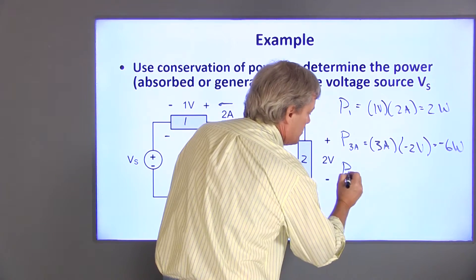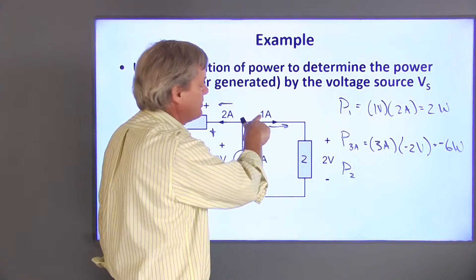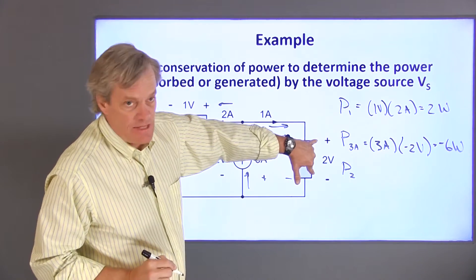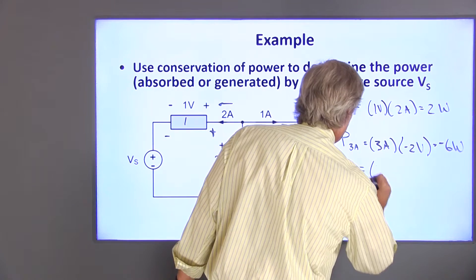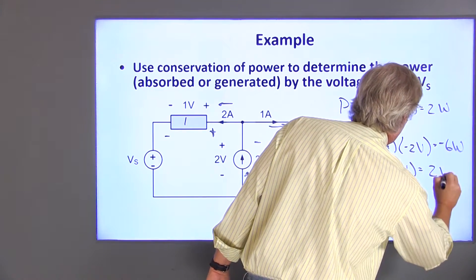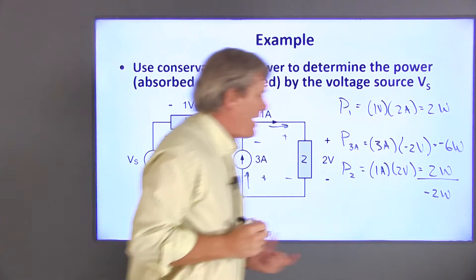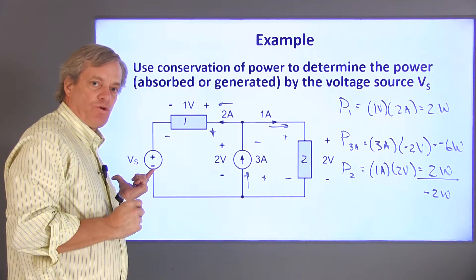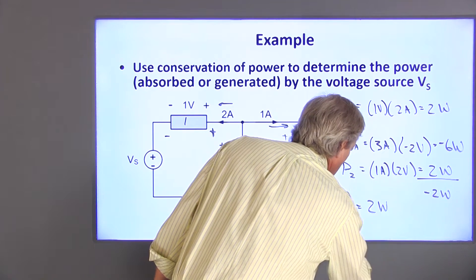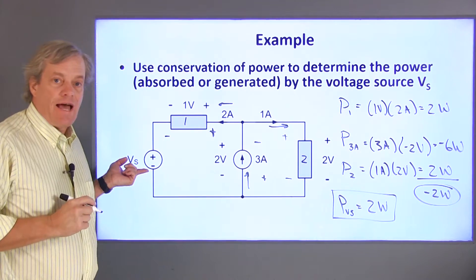For element 2, I'll use this as my positive current direction — it's in the same direction as the actual current, so I'm not going to change signs. That means this is positive and negative, which is the same as the actual sign, so neither needs to change. This gives 1 amp times 2 volts, equal to positive 2 watts. If I add all of these up, I get negative 2 watts total. That has to be balanced out by P sub V sub S, so P V sub S has to be positive 2 watts in order to make everything sum to zero. This voltage source is actually absorbing power.